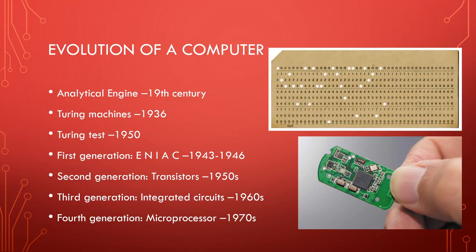Third generation: integrated circuits, 1960s — also called ICs. These contained tiny transistors integrated into the silicon. That little black chip on the screen is an IC. It has transistors inside — one transistor is basically the equivalent of one vacuum tube. That little black chip could have millions of transistors in it. This led to third-generation computers in the 1960s that were smaller, faster, and more reliable than anything dealing with just transistors or vacuum tubes.